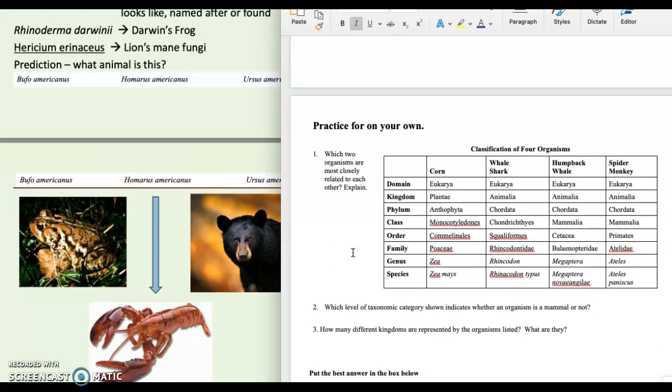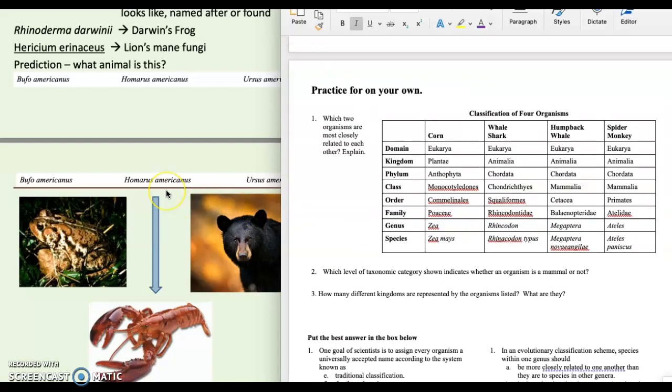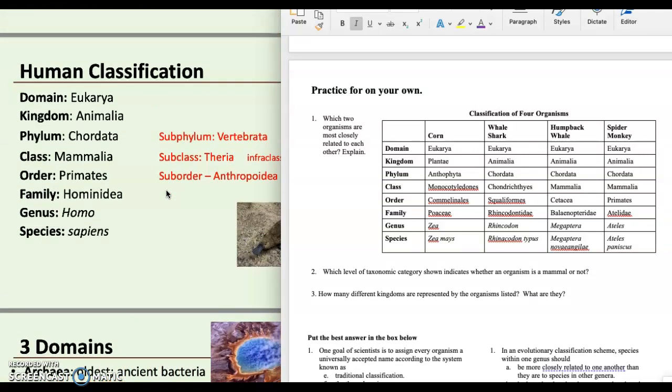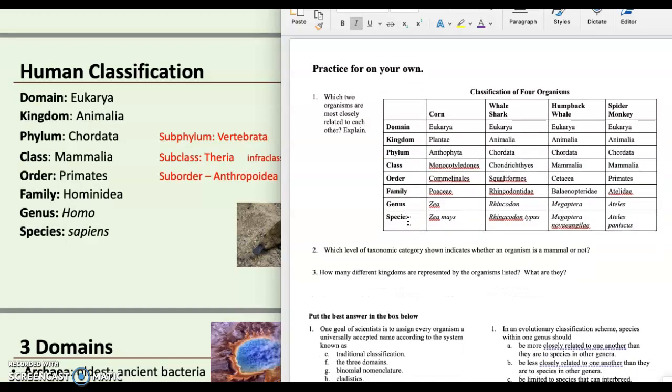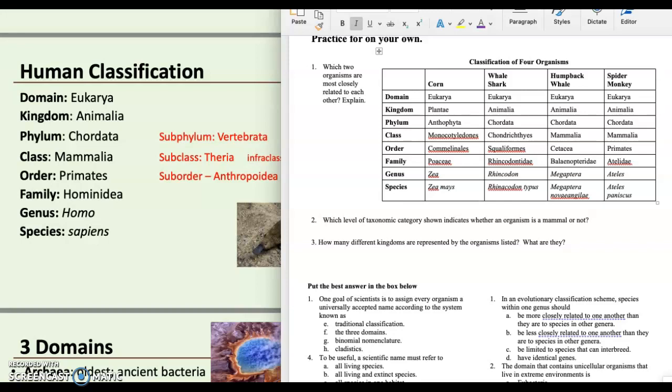Okay, so what I want you to do is do some practice on your own right here. And before I let you go to do that, one thing I want you to remember is, like our dichotomous key, the further down you went, the more similar the species was. They had fewer things that were different. So when you're doing this first question, which two organisms are most closely related to each other? And explain, the further down you go, where they are the same, the more similar those species will be. So there you go. There's your answer for that one. Good luck, and let me know if you need help.